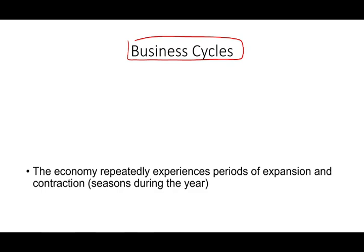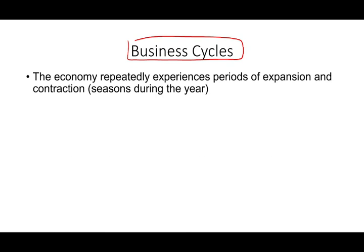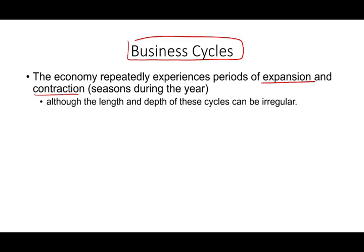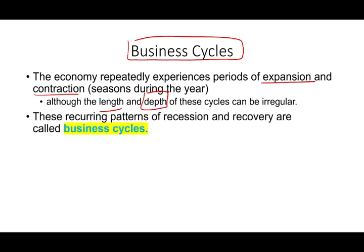So what is the business cycle? Think of the economy like the seasons during the year. We have four seasons: winter, spring, summer, fall, then we go back to winter. We go through repeatedly experiencing periods of expansion and contraction. The length can vary — how long and how severe, whether it's an expansion or contraction, can be irregular. These reoccurring patterns of recession and recovery are what we call the business cycles.